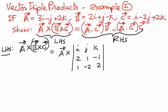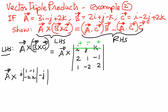When we expand the determinant, we travel along the first row with sign convention positive, negative, positive. This gives: i times the minor [1, -1; -2, 2], minus j times the minor [2, -1; 1, 2], plus k times the minor [2, 1; 1, -2].